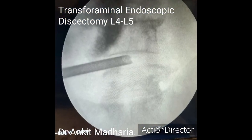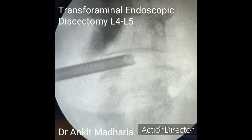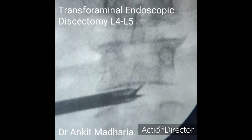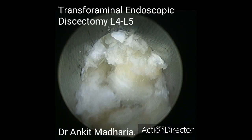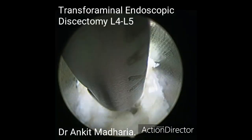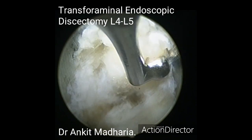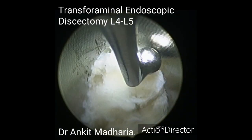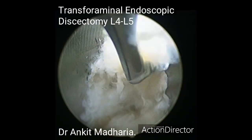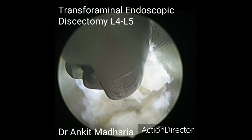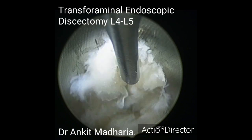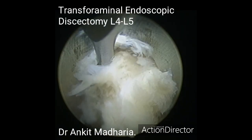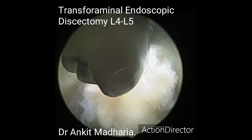An endoscopic portal was created at the level of L4-L5 on the left side. The inside-out technique was followed and intradiscal decompression was started. An endoscopic articulated hook was used to tease out the degenerated nucleus into the working channel. The degenerated nuclear tissue was extracted using a grasper.